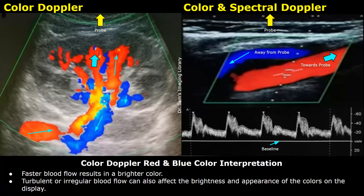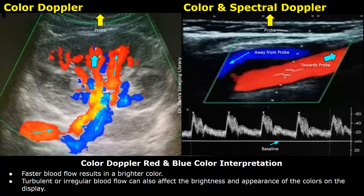The blood in the blue vessel is moving away from the top of the image — that is, away from the probe — and moving downwards away from the kidney as well. So this is the renal vein. This is one of the ways we can distinguish between arteries and veins. When blood flow velocity is higher, the colors become brighter — this area is brighter because blood flow is faster there.